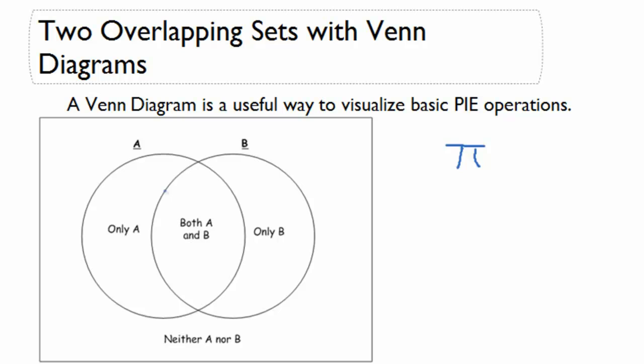We can see in the basic Venn diagram here that we have a center overlap part in which we're going to count the things that are in both group A and B. This keeps us from counting them each twice. Then we have separate only A, only B, and anything outside of the circles is in neither group A nor B.